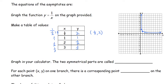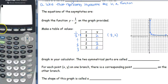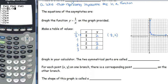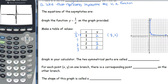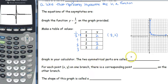Now this is where we get out our calculator. We plug this in: y equals 1 divided by x. We're going to start off and make sure that we have a standard window, so we go to zoom 6. When we graph it, we do see what we had on our paper — that top half — and we also see a bottom half. When you graph this in your calculator, two symmetrical parts are called branches.